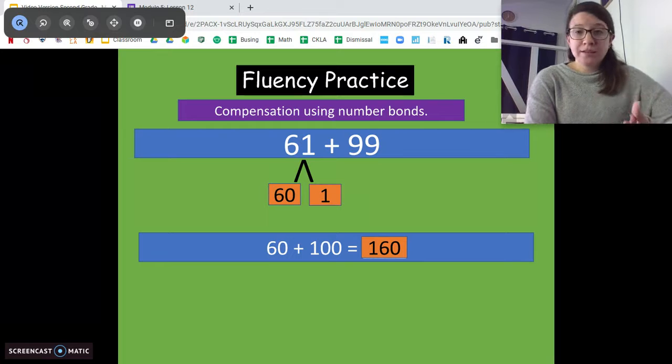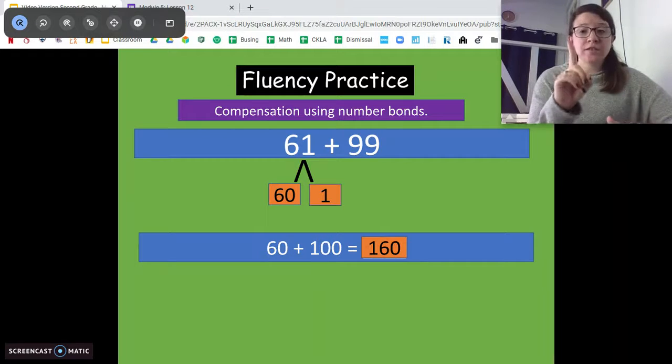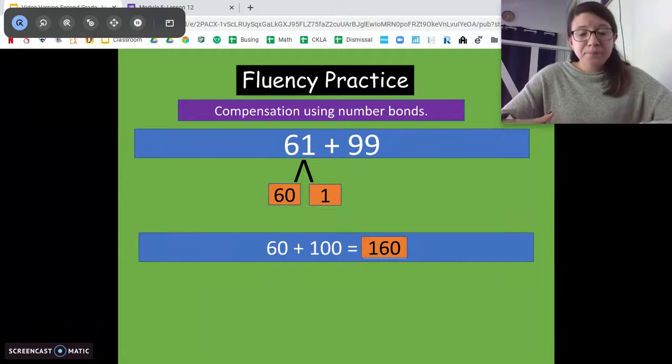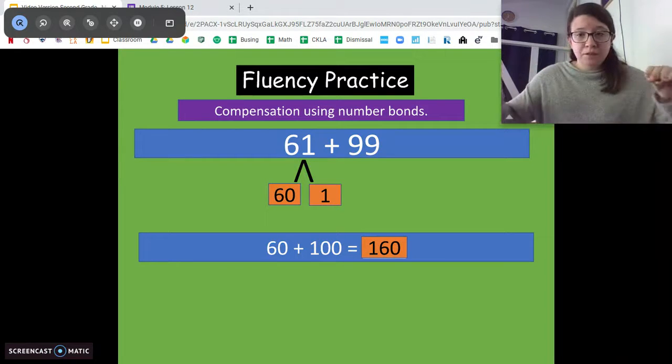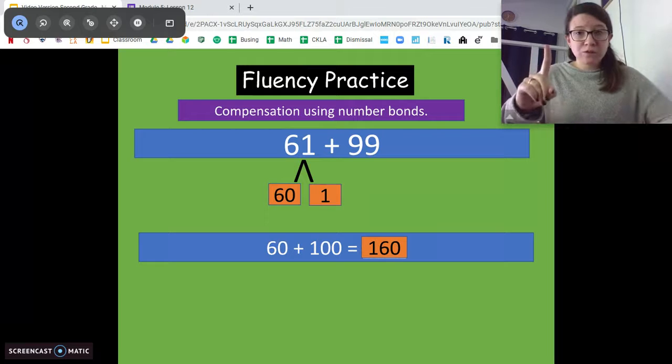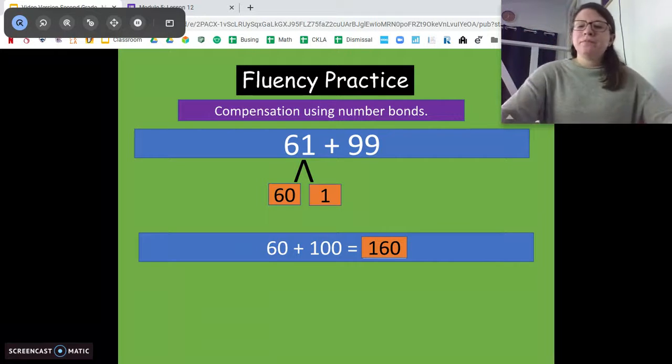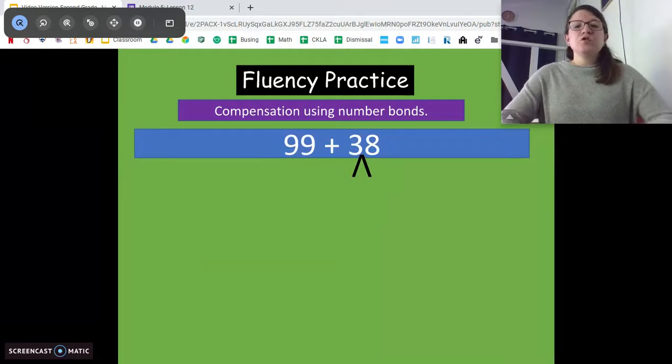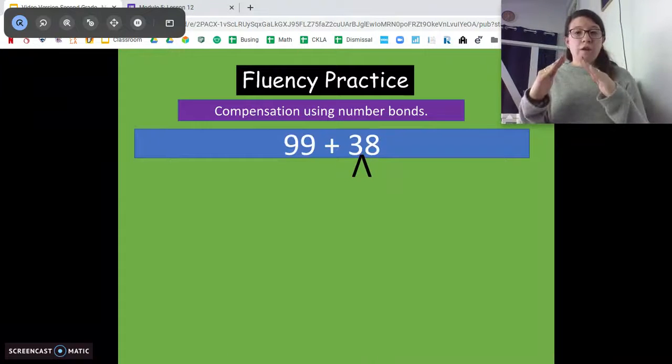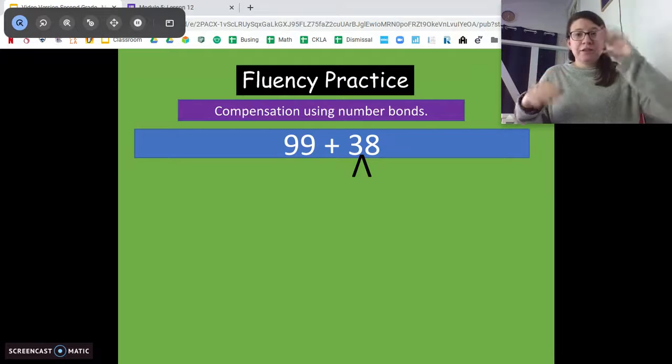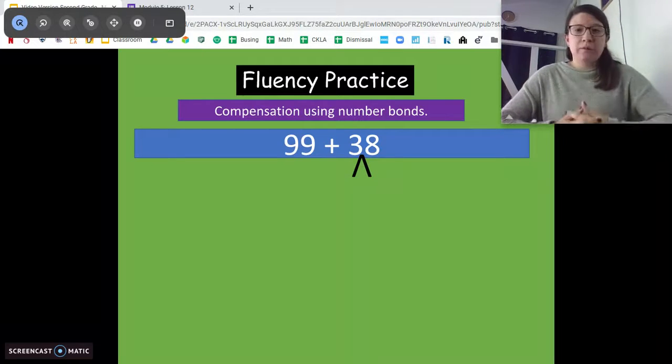Good. I'm gonna have you do the next one on your own. First step, figure out which number is closer to its next hundred. Next step, number bond, number sentence. So figure out which one's closer to its next hundred, number bond, number sentence, solve. Alright, try this one. There's a number bond already under the 38 so you gotta get that 99 to its next hundred. So pause and solve and we'll come back and go over it.